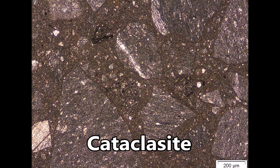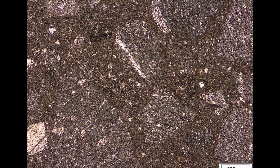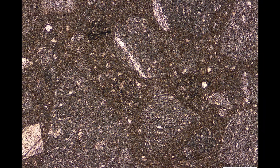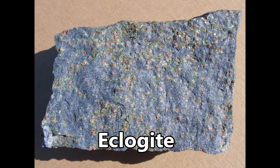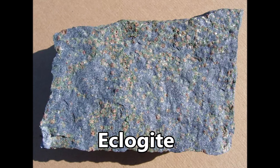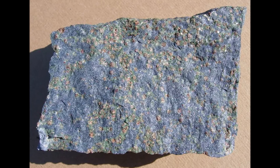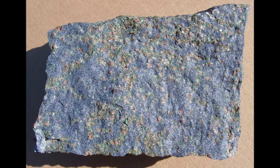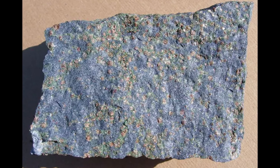Cataclasite is a fine-grained breccia produced by grinding rocks into fine particles, or cataclasis — this is shown here as a microscopic thin section. Eclogite is an extreme metamorphic rock formed by regional metamorphism of basalt under very high pressures and temperatures, and is the name of the highest-grade metamorphic facies.